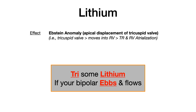Lithium causes Ebstein anomaly — apical displacement of the tricuspid valve. Pathophysiologically, the tricuspid valve moves into the right ventricle, causing tricuspid regurgitation and right ventricular atrialization. On your exam, you'll have a newborn presenting with signs of cyanosis and possibly heart failure, and they'll ask what agent the patient's mother was taking during pregnancy. The answer is lithium. Sometimes the test writer hints at lithium by suggesting a history of mental illness.